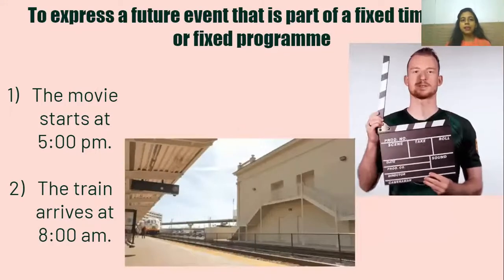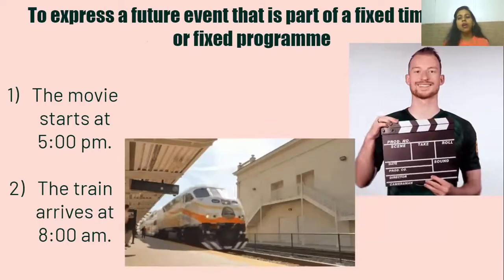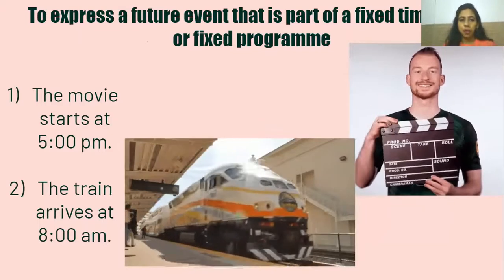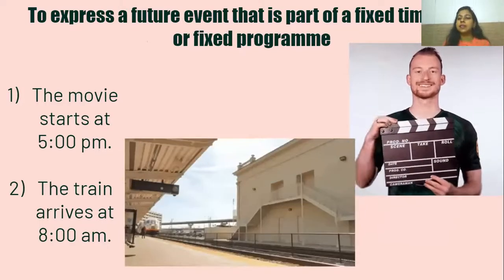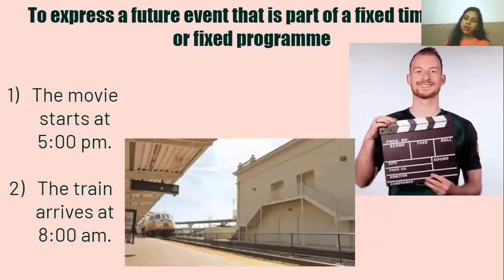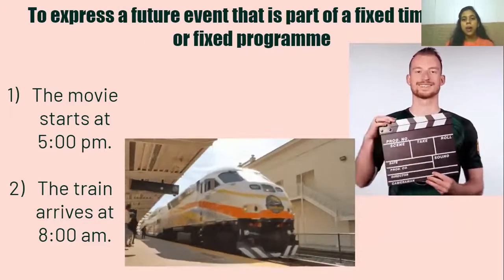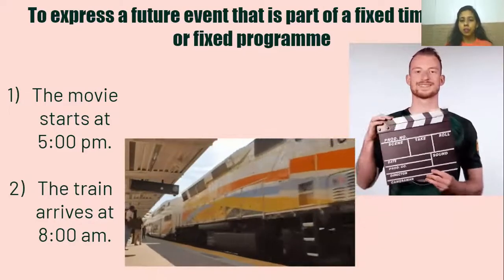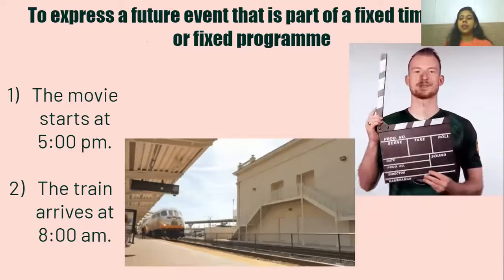Lastly, we use the simple present tense to express a future event that is part of a fixed timetable or a fixed program. For example: the movie starts at 5 p.m.; or the train arrives at 8 a.m. This action is supposed to happen in the future, but because it is part of a fixed timetable, we use the simple present tense.